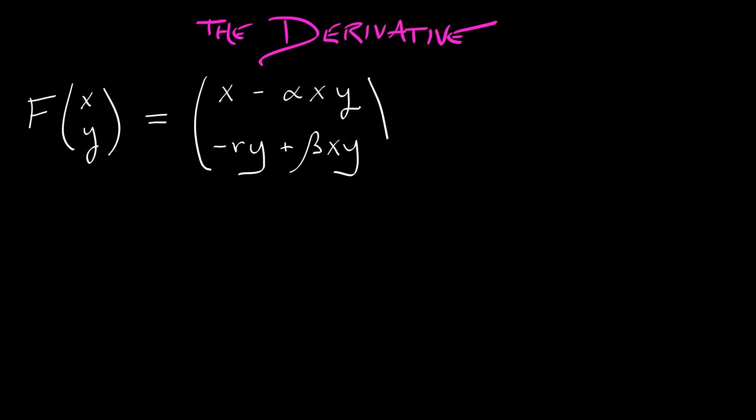To classify these equilibria, we look at the derivative of the right-hand side as a function of x and y. The derivative is the 2×2 matrix with entries: first column has 1-αy and βy; second column has -αx and βx-r.